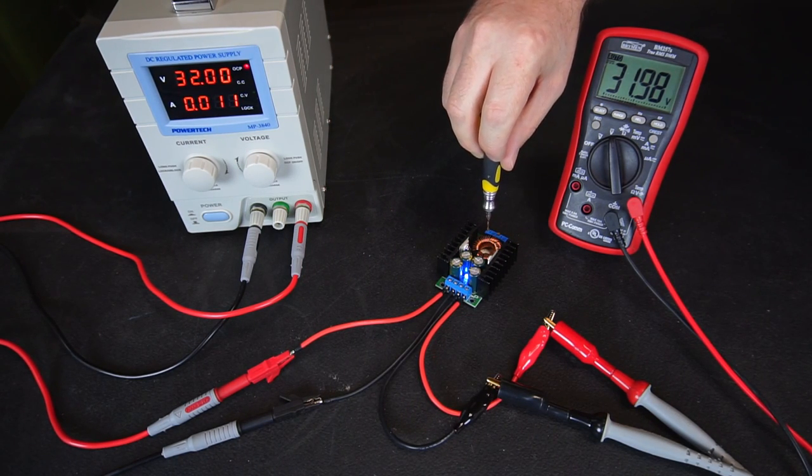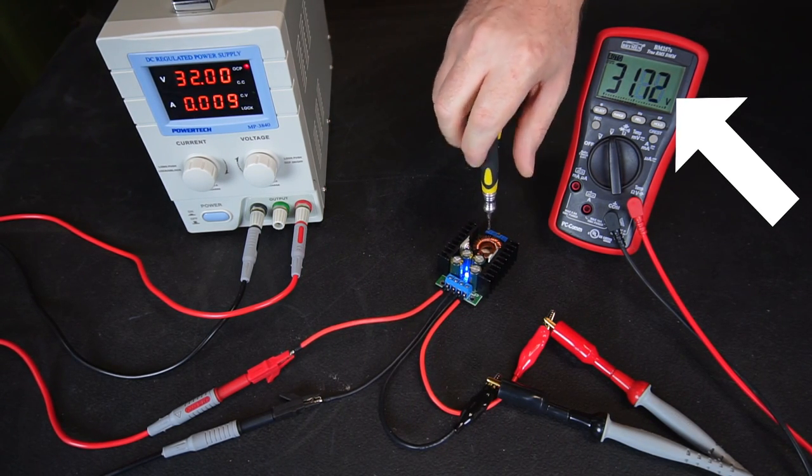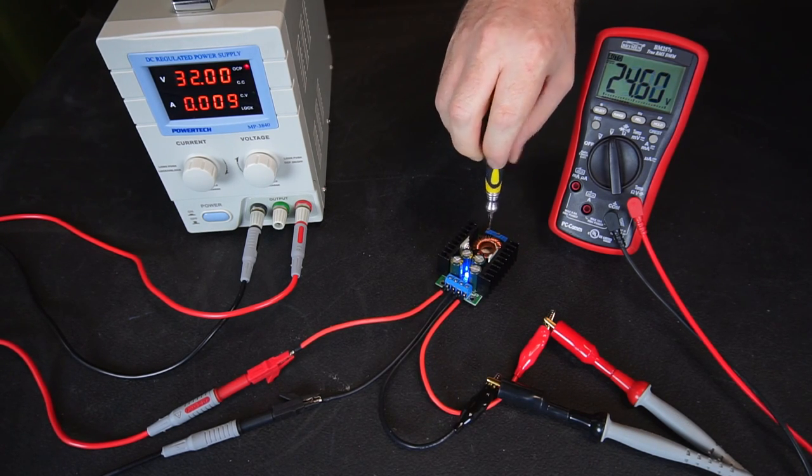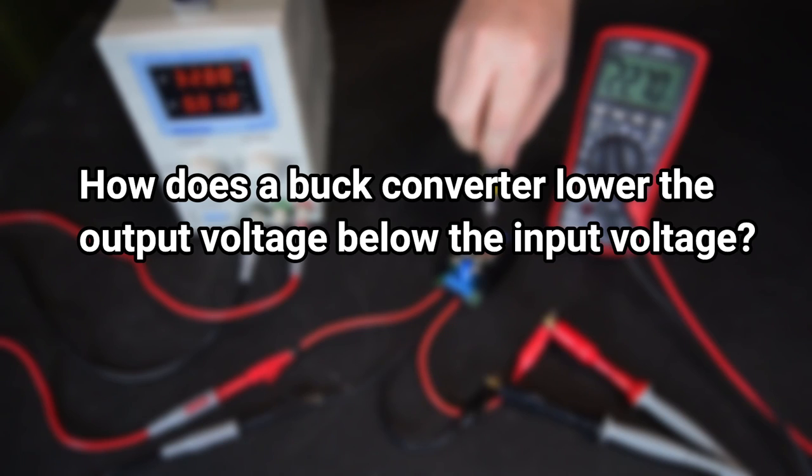If I turn the voltage adjustment trimmer I can set the output voltage to whatever I want. So far I've demonstrated the principal function of a buck converter, but how does a buck converter lower the output voltage below the input voltage?